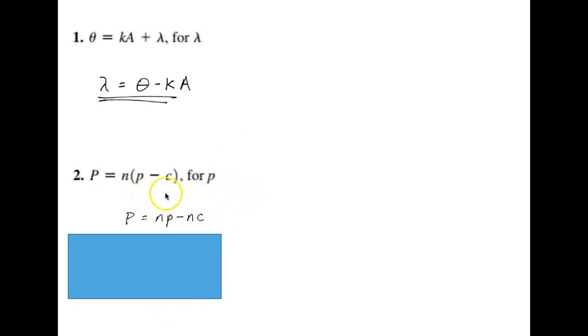In the next problem, we're asked to solve for p. Now this p is the lowercase p. And notice it's in parentheses, and there's an n on the outside. So the first thing we've got to do is we've got to distribute that n to both the p and the minus c. So we're going to say n times p and n times minus c. So that's what we end up with. P equals np minus nc.